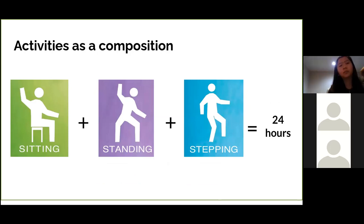So that means when I spend one more hour longer sitting, I have less time remaining to stand or step. So I can convert the values into a proportion that sums up into 100%. And in this form, we can create a three-dimensional plot based on this proportion like this.